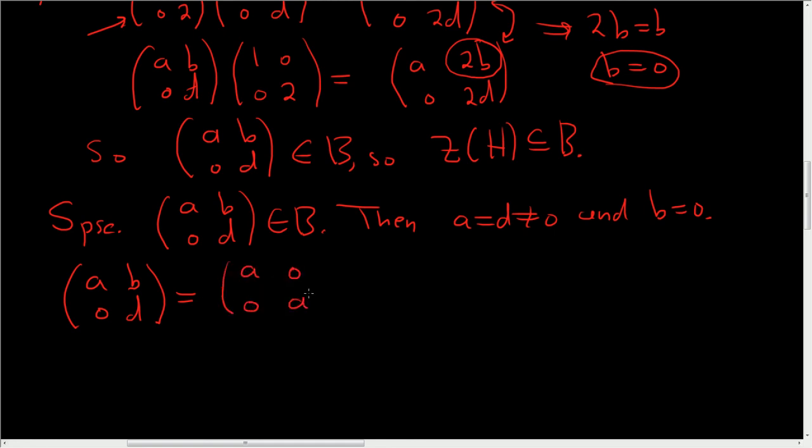(a, b; 0, d), just for clarity, would be (a, 0; 0, a). Now to show that this is in the center, we basically have to show that it commutes with every single element of H.